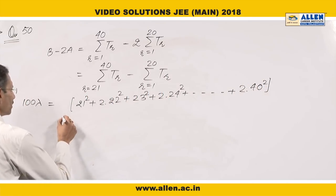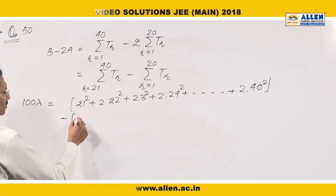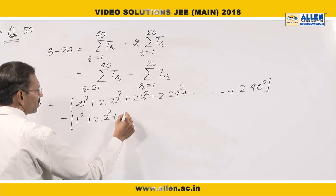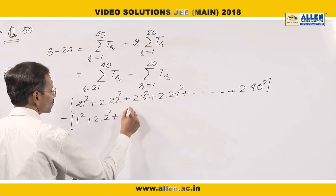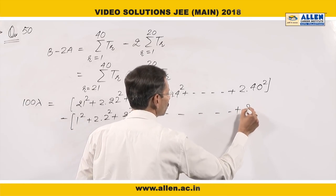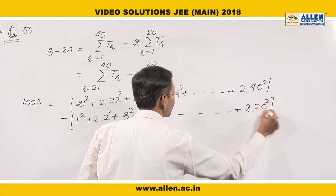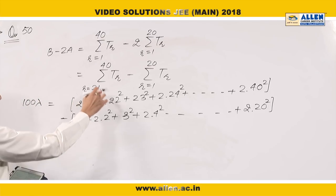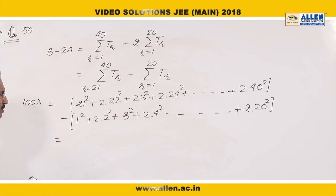Then minus. The first 20 terms is 1 square plus 2 into 2 square. Then 3 square, 2 into 4 square and so on up to 2 into 20 square. I hope you are getting my point. What I am trying to do is, I will calculate them pair-wise. A square minus B square, A square minus B square in every term.